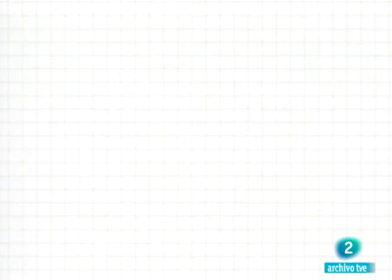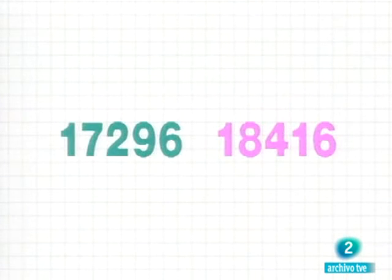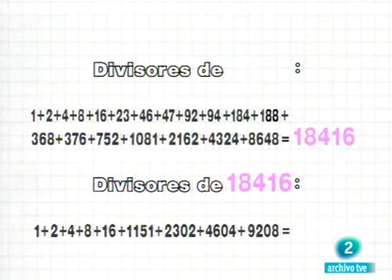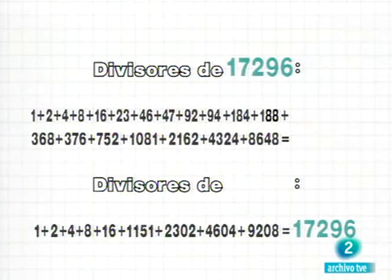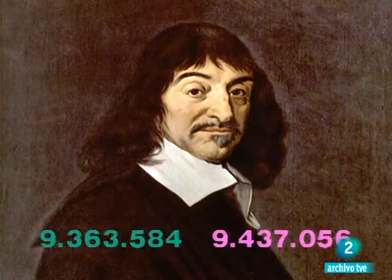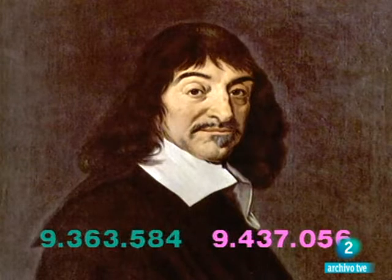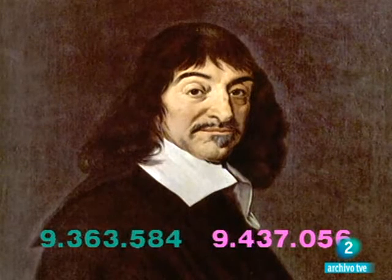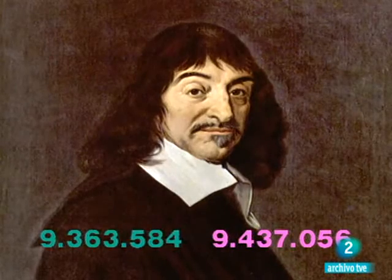Fermat había descubierto en 1636 la segunda pareja de números amigos, 17.296 y 18.416. Su compatriota y rival, Descartes, dos años más tarde, descubrió una tercera, nada simple por cierto, 9.363.584 y 9.437.056.